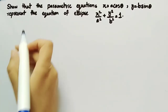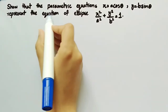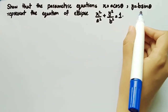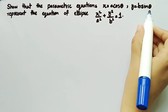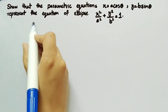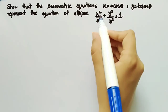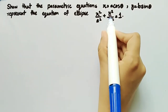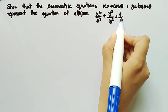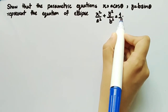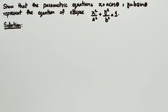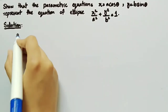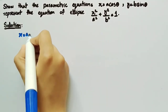In this video we will show that the parametric equations x = a·cos θ and y = b·sin θ represent the equation of the ellipse x²/a² + y²/b² = 1. It is given in the question that x = a·cos θ.